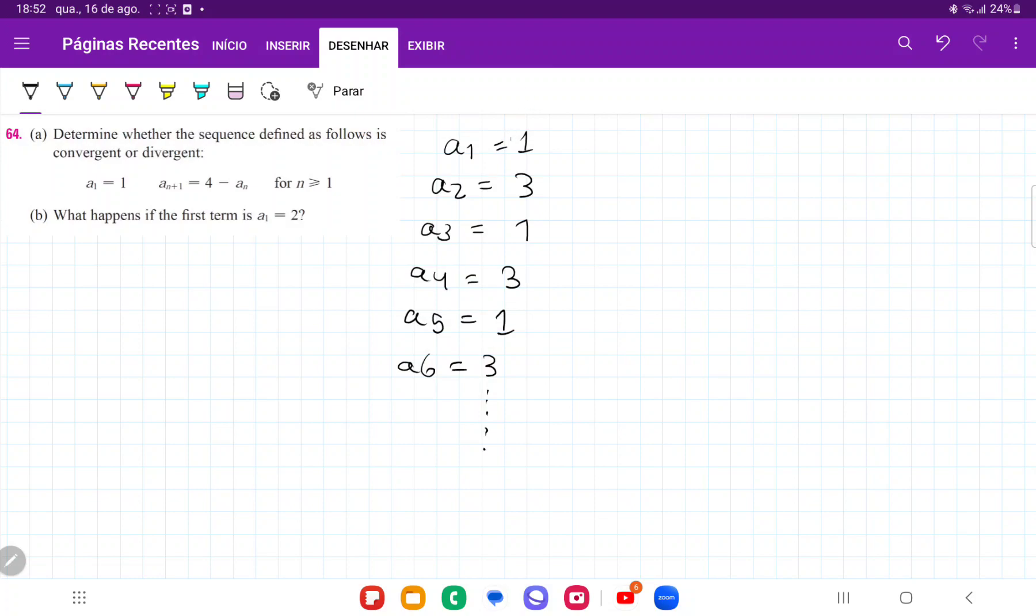We can see that this basically oscillates between 1, 3, 1, 3, 1, 3. So this sequence for n greater than 1, beginning at 1, is divergent because it doesn't actually get closer to a specific value. It just oscillates back and forth.